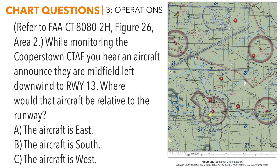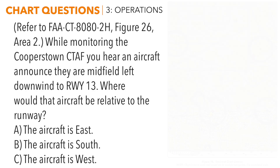For our final question, refer to figure 26, area 2. While monitoring the Cooperstown CTAF, you hear an aircraft announce they are midfield left downwind to runway one-three. Where would the aircraft be relative to the runway? To answer this you don't even really need the chart — we'll use it to double-check. This is just a traffic pattern question, and I'd encourage you not to try to do this in your head to avoid mistakes. Draw it out on the scratch paper provided at the testing center.